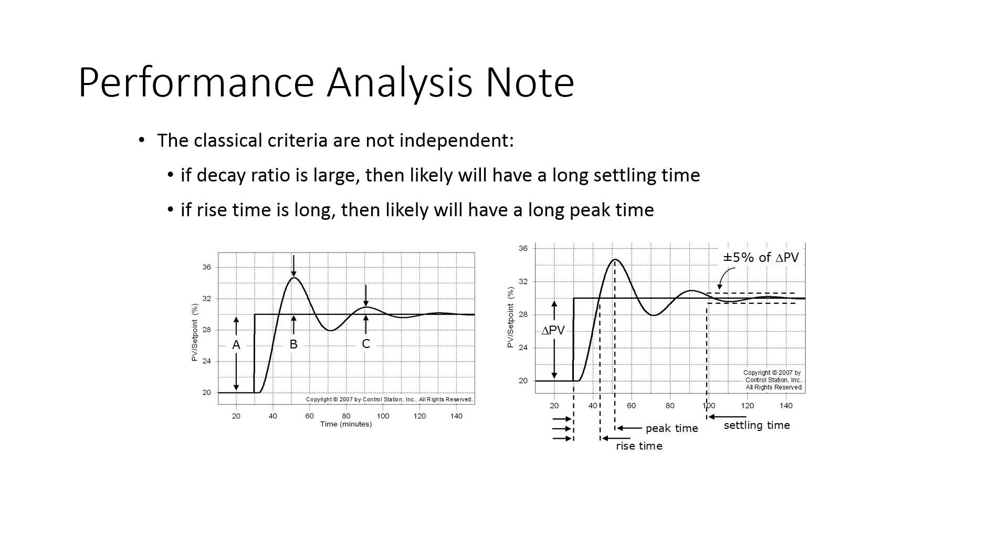Just one thing that a couple criteria are not independent. If you have large decay ratio, then you're probably not going to have a long settling time, very short. If the rise time is long, then it will probably have a long peak time. So you don't need to use all of these criteria in designing and evaluating the control of performance.